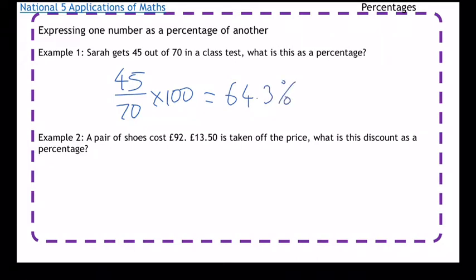Example 2: A pair of shoes cost £92, £13.50 is taken off the price. What is this discount as a percentage? So we want 13.50 over 92, and again just times it by 100.